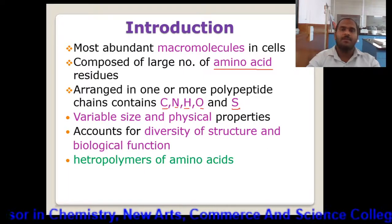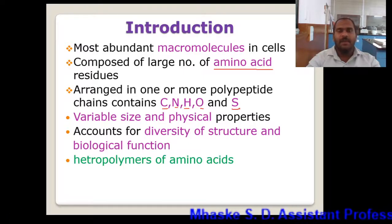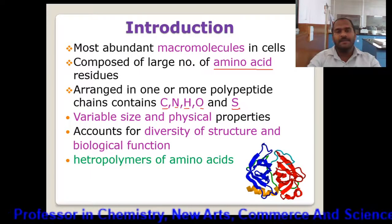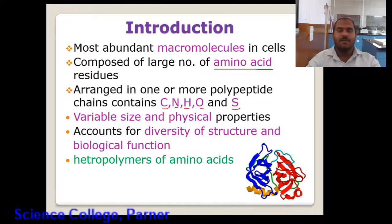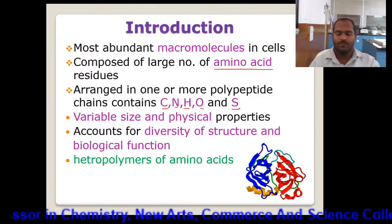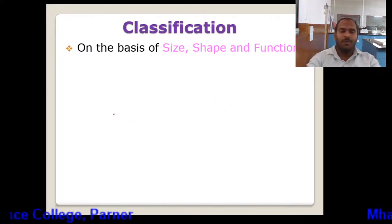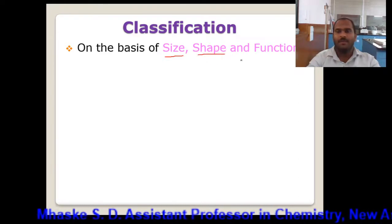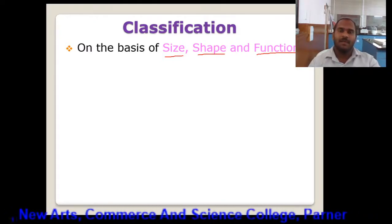A large number of molecules are included under the heading of proteins, therefore the classification of these protein molecules is really important, as they have a large number of groups for classification. In that classification we can consider a different range of classes. Proteins are classified on the basis of size, on the basis of shape, and on the basis of function. So we have three bases for the classification of protein.